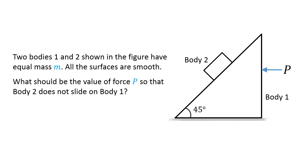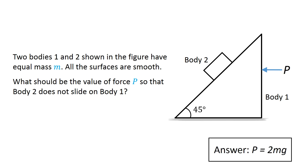Pause this video and try to figure out this problem. The value of the force p that prevents body 2 from sliding on body 1 is 2 times mg, where g is the acceleration due to gravity.